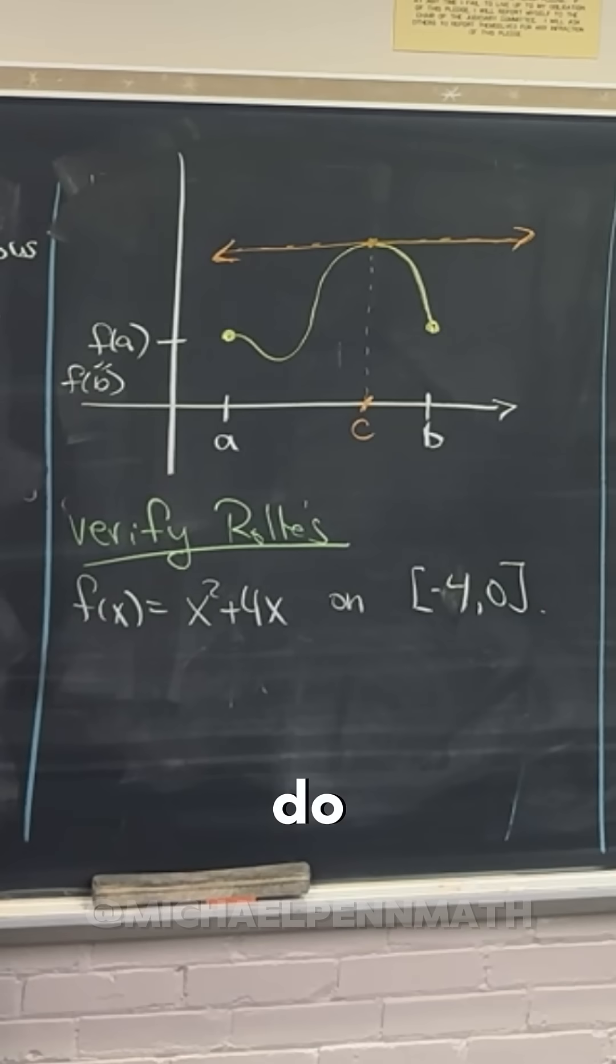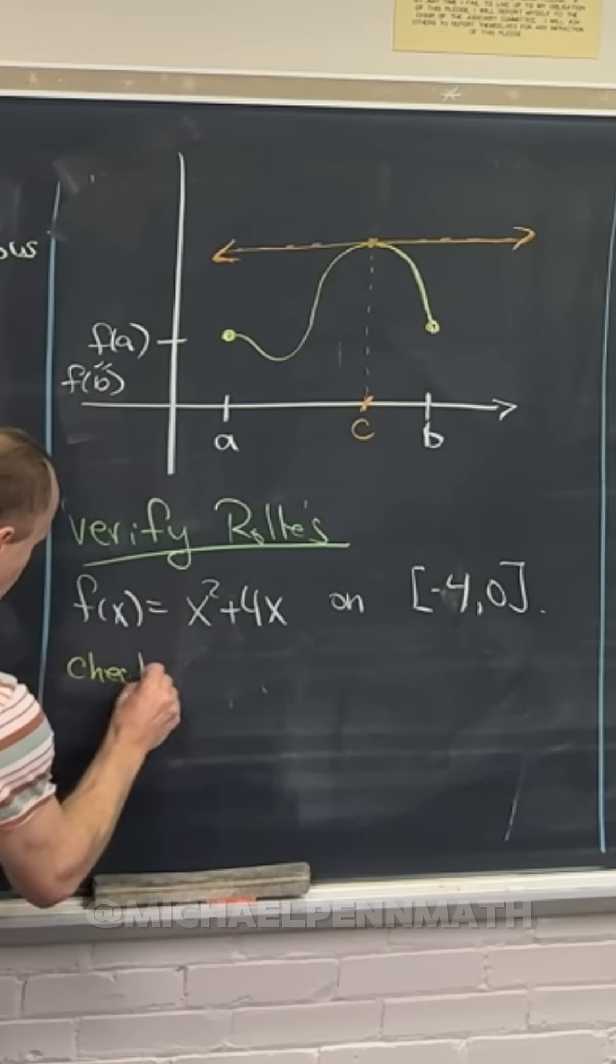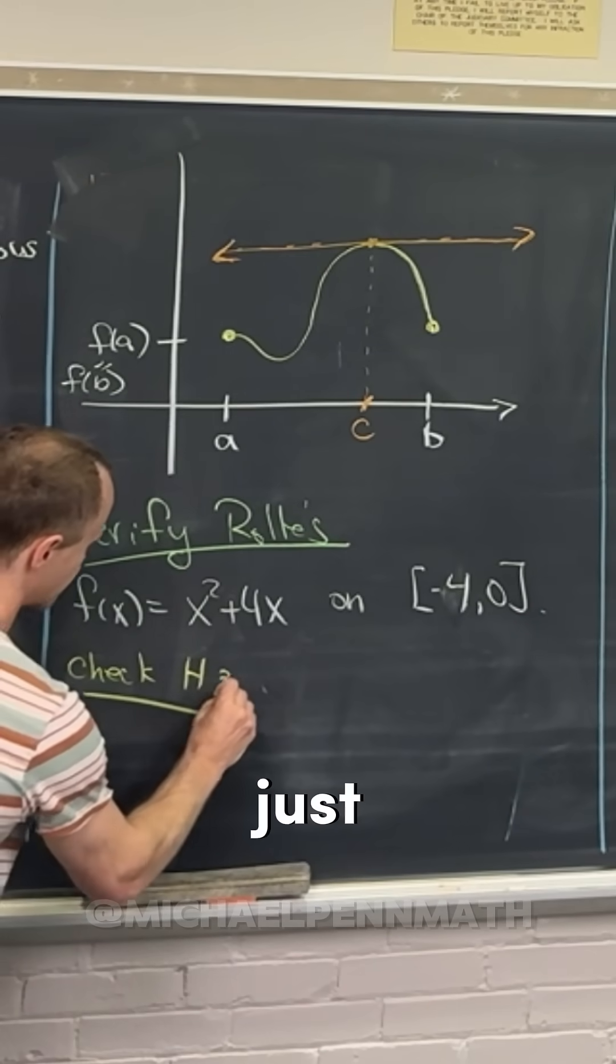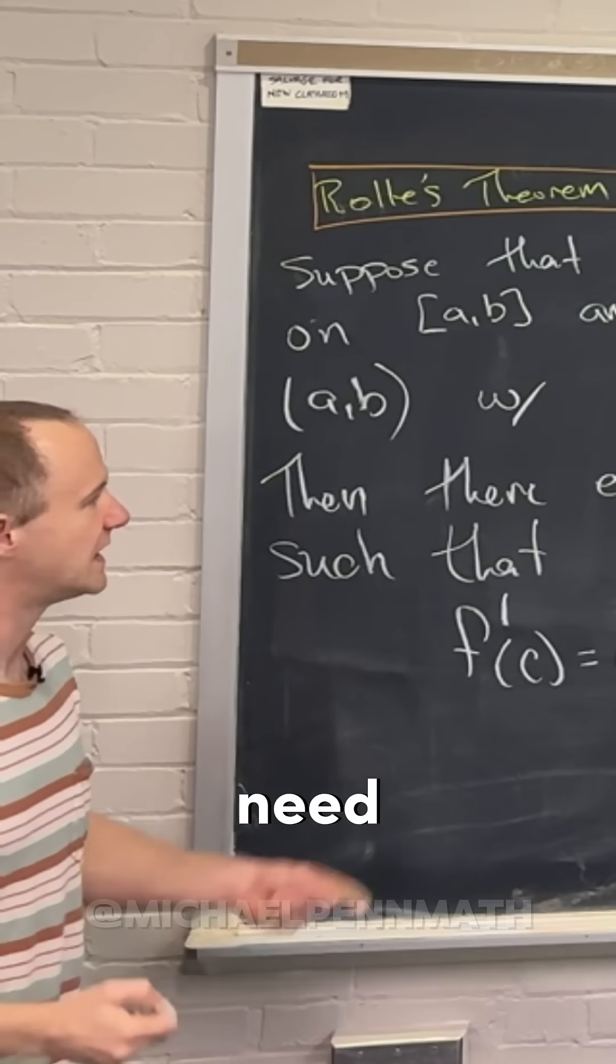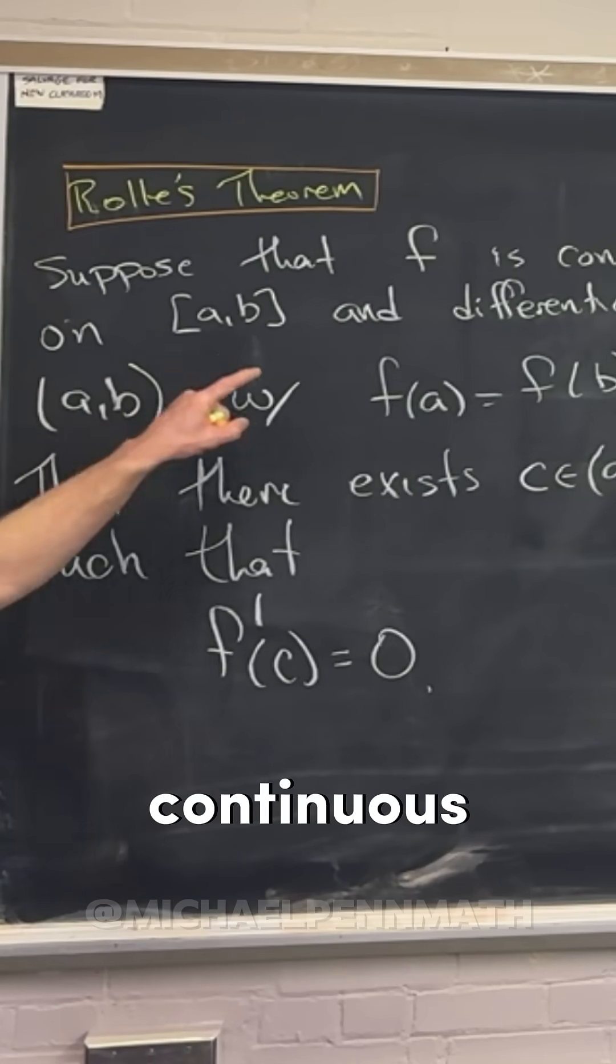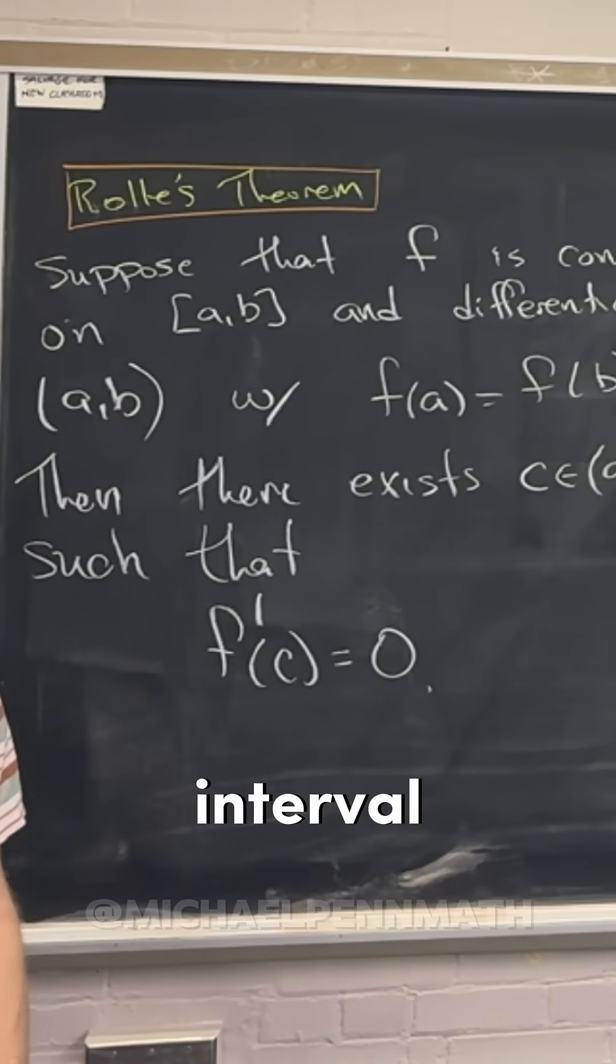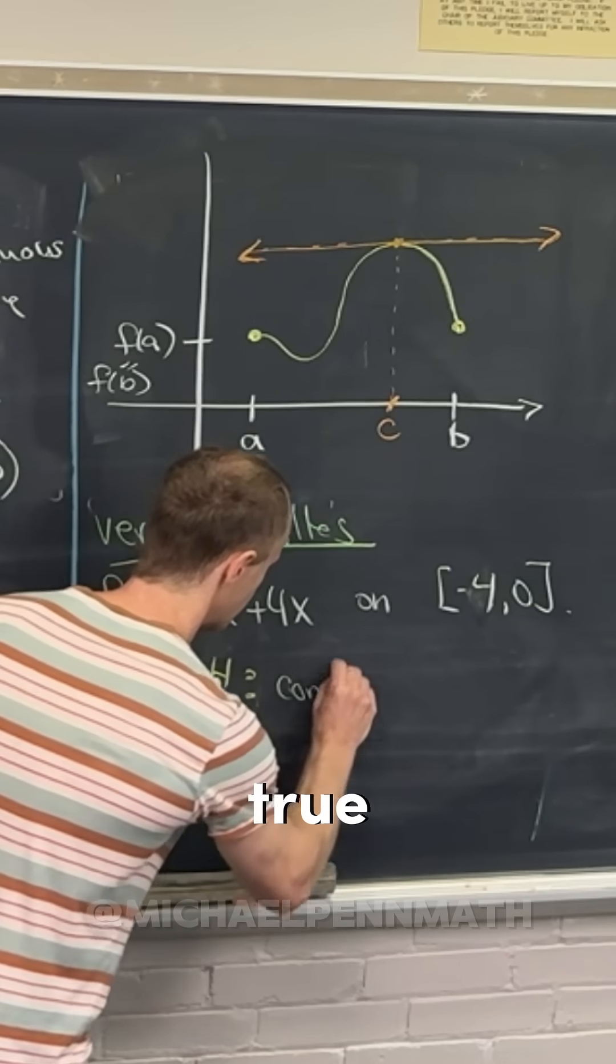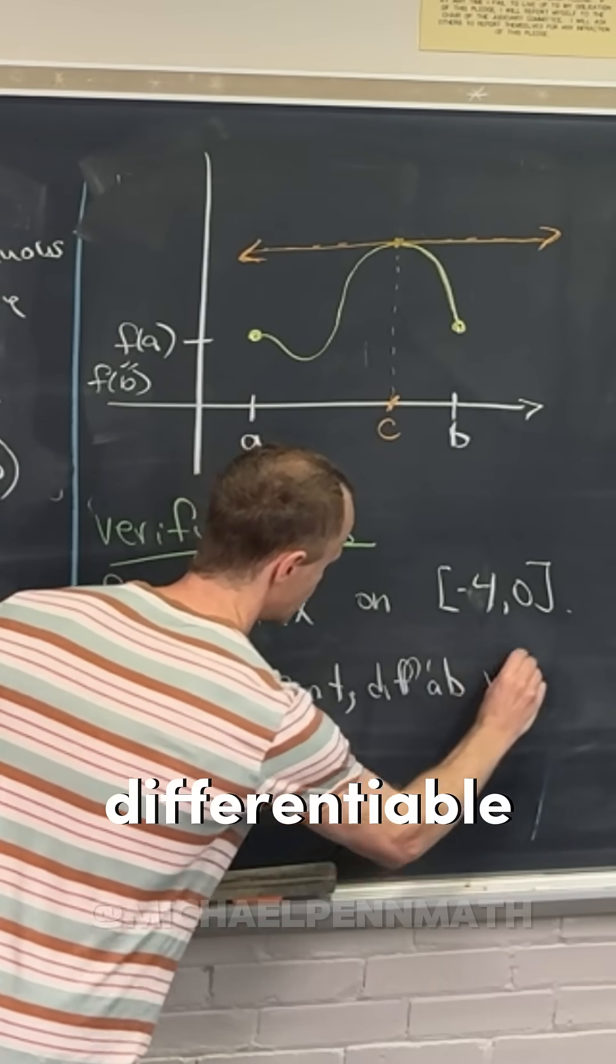So probably the first thing that we want to do is check the hypotheses of Rolle's theorem. Well, what do we need? We need this thing to be continuous on that interval and differentiable on that interval, but both of those are kind of clearly true. So continuous, differentiable, check.